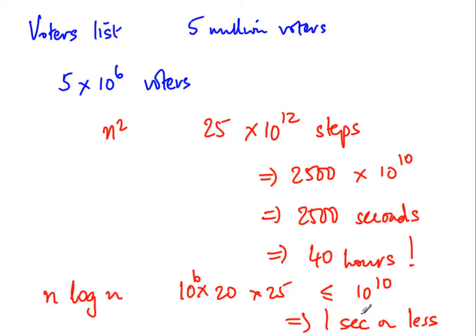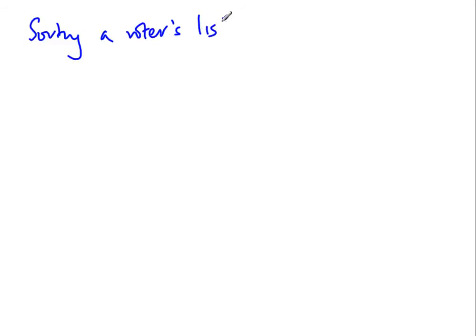We are really interested in what happens as inputs get large, since in practice data is large. One might argue that sorting a voters list is an offline activity — done once, then published — so if it takes 40 hours or a couple of days, that is fine. Is this a valid reason not to switch to an n log n algorithm, since it is a one-time infrequent activity?